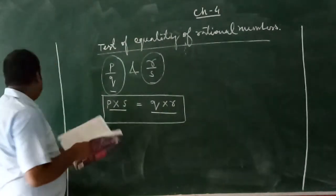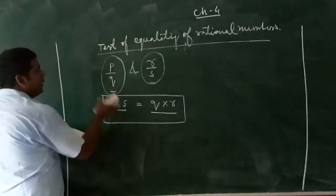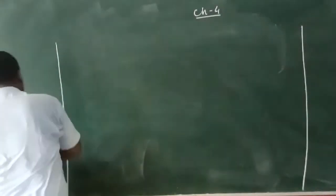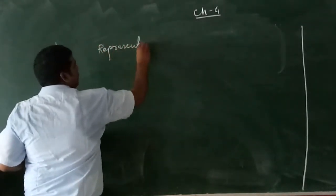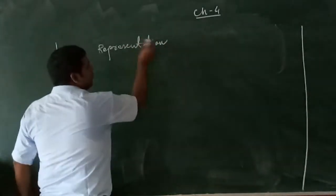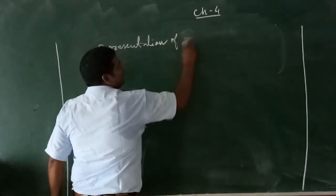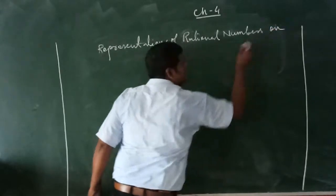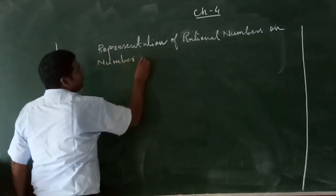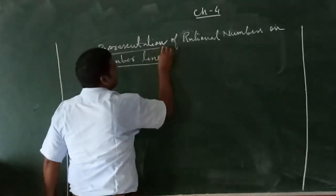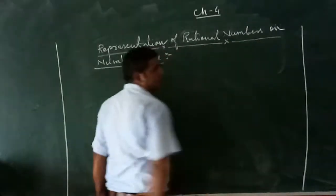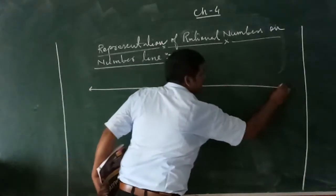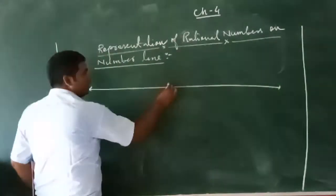Now we move on to the representation of rational numbers on the number line. In this topic, we will discuss how a rational number can be represented on a number line. This is the number line.